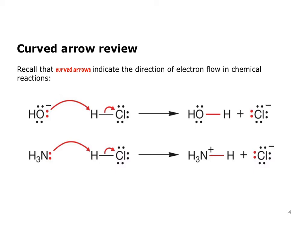A little review on curved arrow formalism. We use curved arrows to indicate the movement of electrons during the course of a chemical reaction. Here we have some really simple examples. We have the acid-base reaction of hydroxide reacting with hydrogen chloride. During the course of that reaction, there's some bond making and bond breaking that occurs. We have two arrows that indicate mechanistically that this happens in one step. Following the flow of electron density, we can see a pair of electrons from hydroxide is going to form a bond to hydrogen, and at the same time, the bond between hydrogen and chlorine breaks.